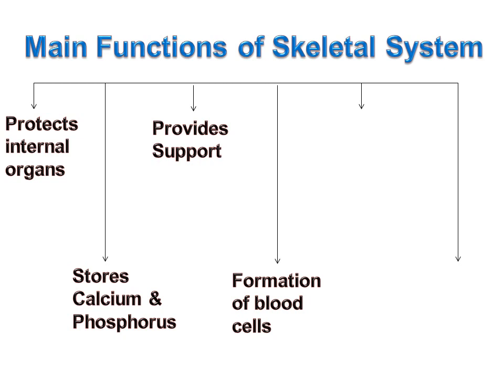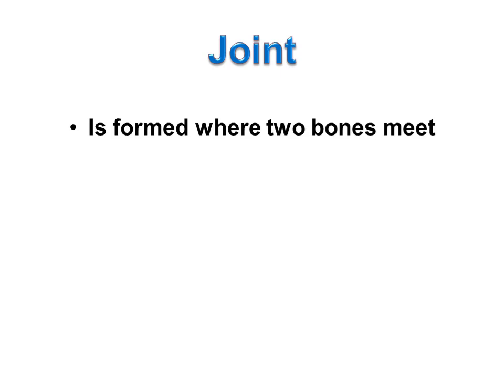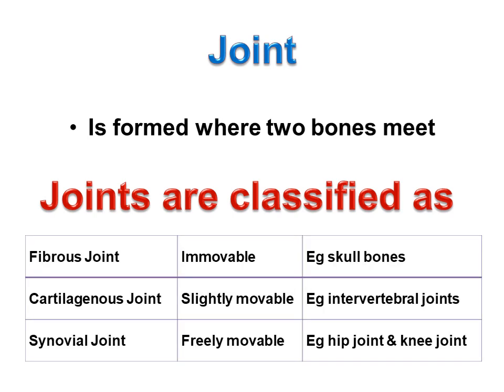The fifth function of the skeletal system is that bones help muscles in body movement and provide leverage at the joints. Now let's learn what a joint is. A joint is formed where two bones meet. Joints are classified as fibrous joints, which are immovable — e.g., the skull bones; cartilaginous joints, which are slightly movable — e.g., intervertebral joints; and synovial joints, which are freely movable — e.g., the hip joint and the knee joint.